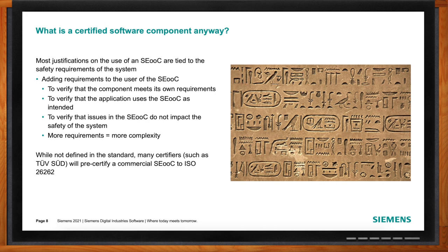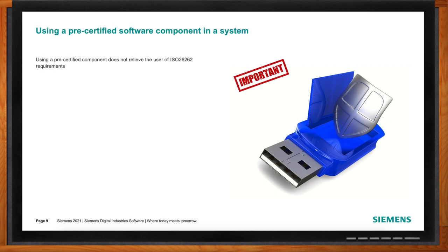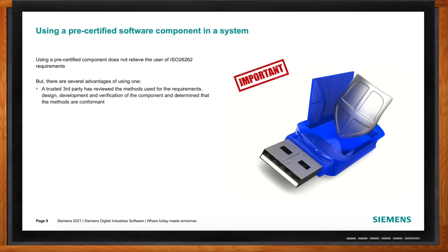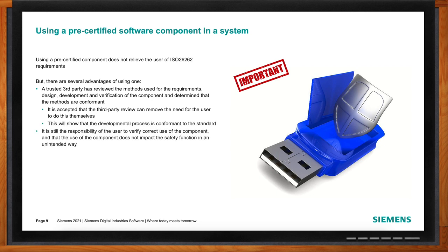The industry has basically decided that this third-party review relieves the responsibility of the ECU provider to do that review themselves. It does impose additional requirements but makes it much easier to use third-party software in your system. When you start using a pre-certified component, a trusted third party has already reviewed it and verified the software can be used — perhaps with some constraints — and it's those constraints you still need to worry about when applying it to a system. It is still your responsibility to verify you're using the component correctly.